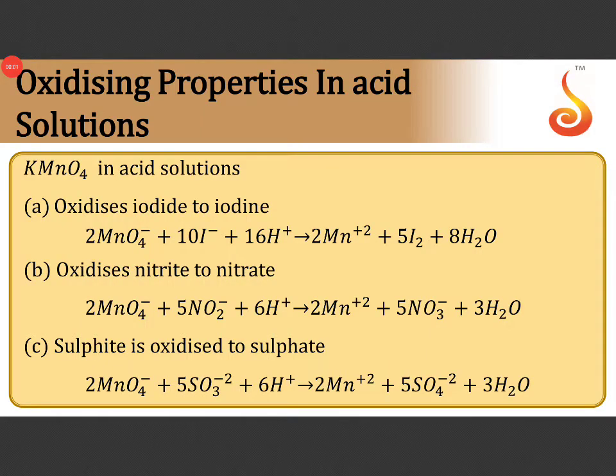Next we are trying to learn the balancing of oxidation of KMnO4 by ion electron method, balancing equations. In the description I have given BE means balancing equations. Oxidation of nitrite to nitrate. Let us learn how it is.